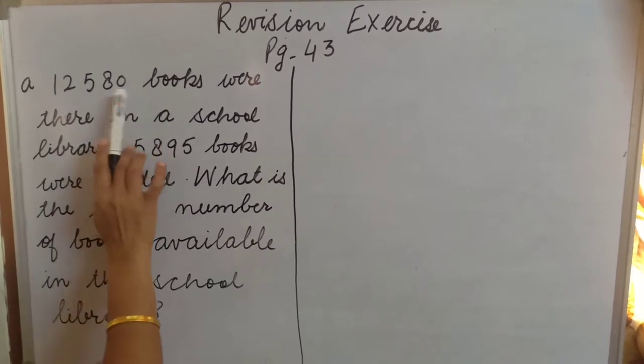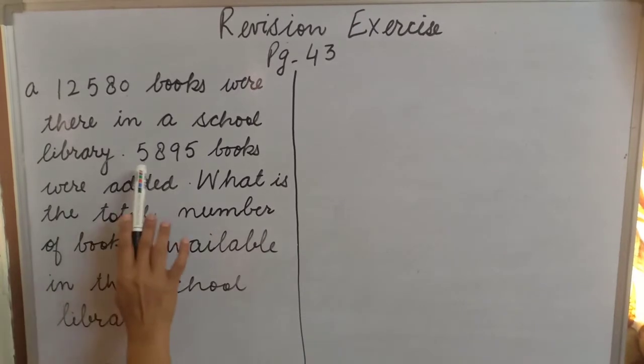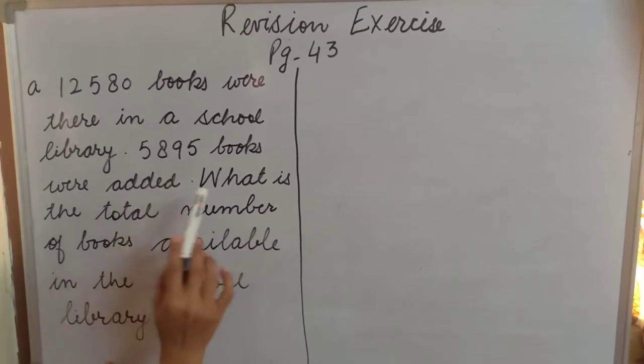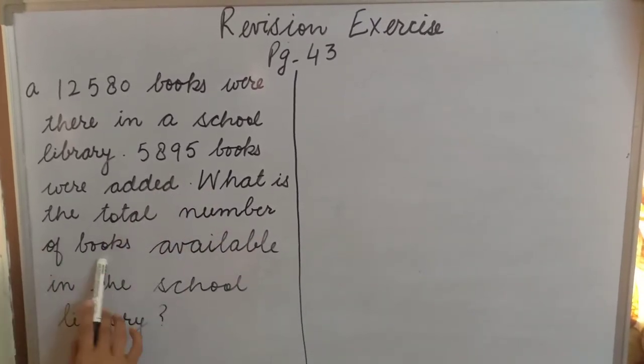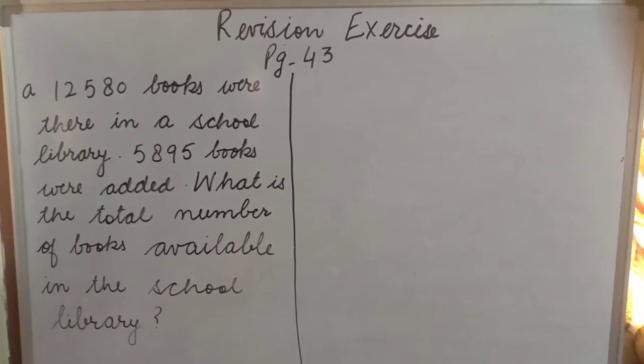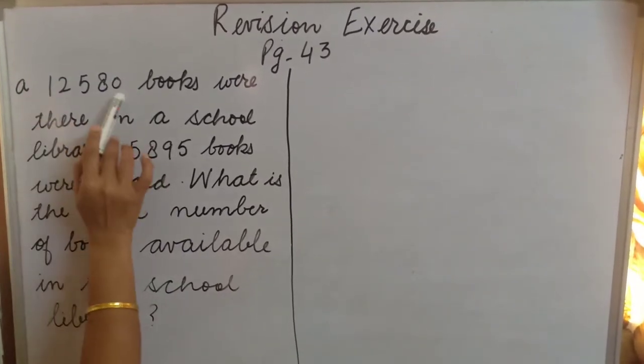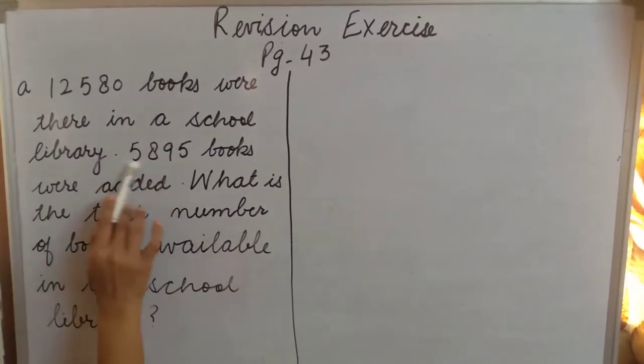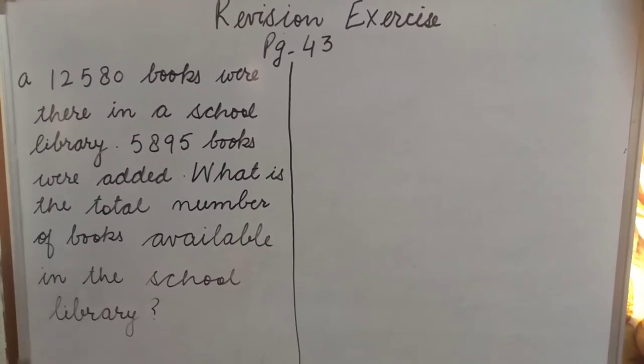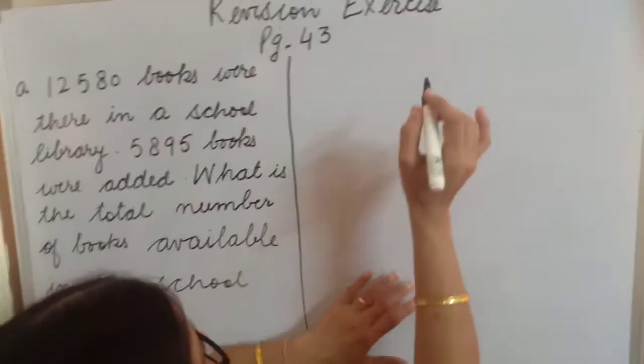12,580 books were there in a school library. 5,895 books were added. What is the total number of books available in the school library? Before doing the work, you will understand what these numbers are telling us. This is the number of books earlier and these are the number of books added more, and we have to solve this sum in two methods: actual and estimated. Two answers we have to find out.